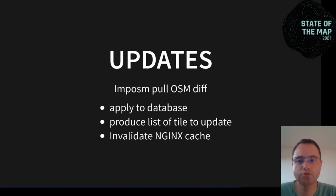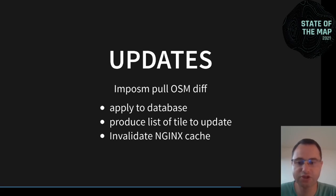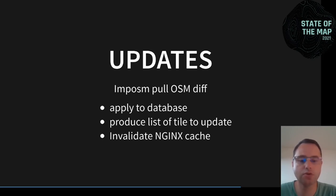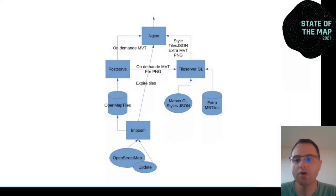For updates, imposm pulls OSM diffs from a web service like Geofabrik and applies them to the database. It updates the original tables, firing triggers that update the derived generalized tables. imposm also produces a list of tiles to be updated from this data, and this list is sent to NGINX to invalidate the cache of those tiles. The strategy is simple — just deleting the old tiles. It's not as advanced as renderd, which allows many strategies for cache invalidation.